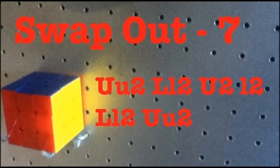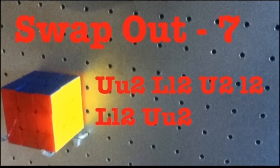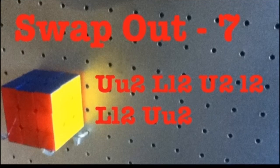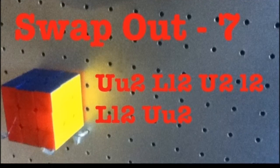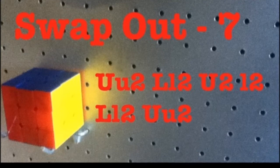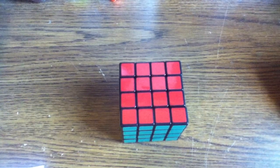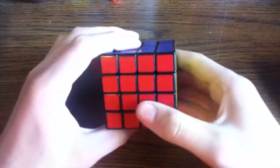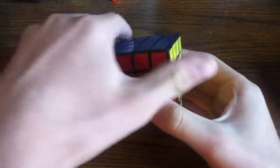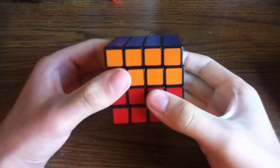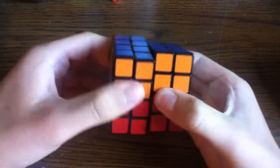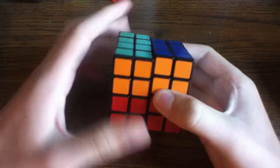The next algorithm we'll be learning is what I like to call the Swap Out 7, because it swaps out some edge pieces, and it consists of only 7 moves. To perform the Swap Out 7 algorithm, you first take the top two sides of the cube, rotate them 180 degrees in either direction, take the left two sides, rotate them 180 degrees.